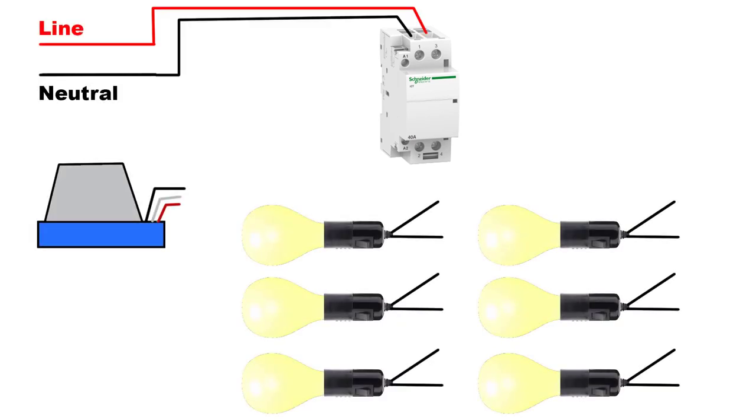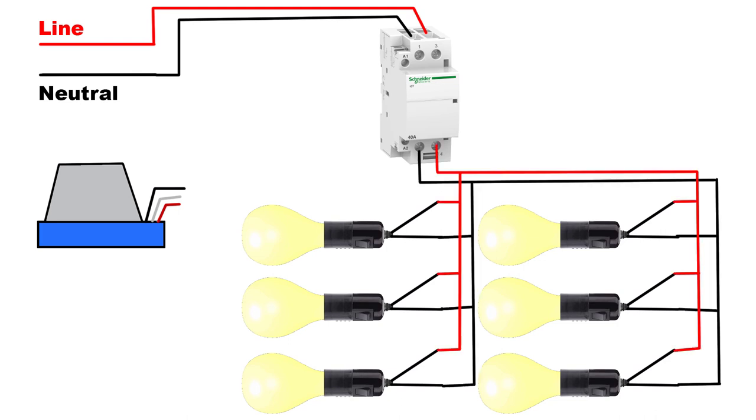Connect the line and neutral to the input of the contactor, and the output of contactor will be connected to the lighting system. Now, connect the line to the input pin of photocell.